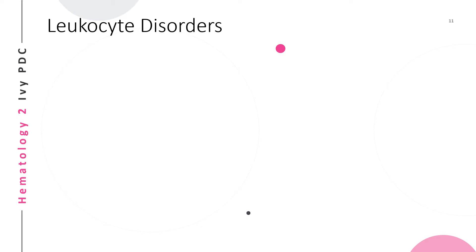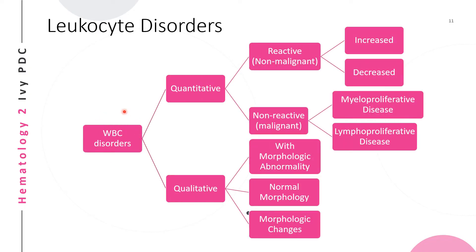Before continuing with WBC anomalies, let's have an overview of the different leukocyte disorders. White blood cell disorders can be categorized into two: quantitative or qualitative. Quantitative can be further divided into reactive or non-malignant, and non-reactive or malignant. Reactive disorders may give an increased or decreased disorder. Non-reactive or malignant disorders are divided into myeloproliferative and lymphoproliferative diseases. Qualitative disorders are caused by three conditions: morphologic abnormalities, normal morphology, or morphologic changes.